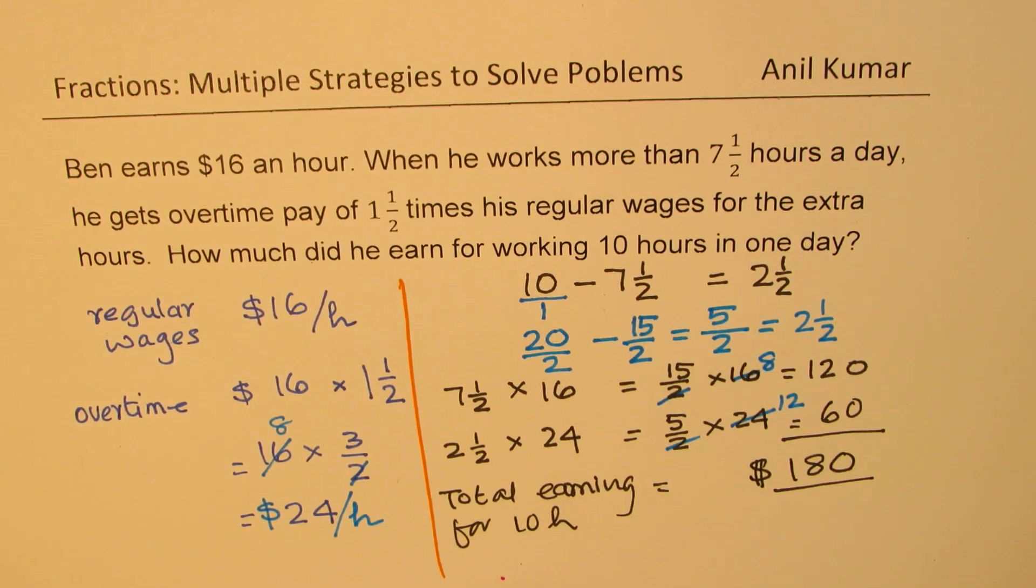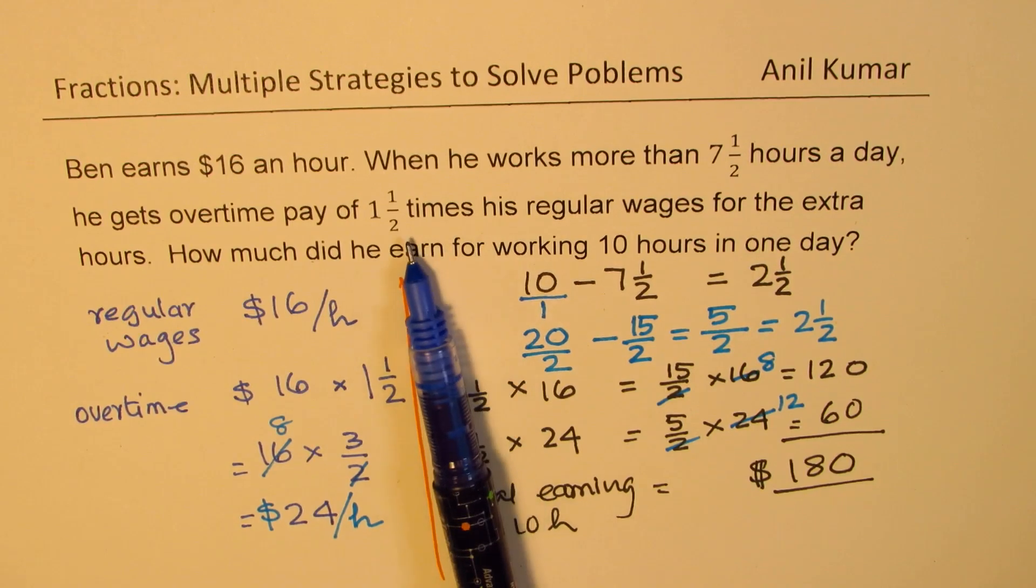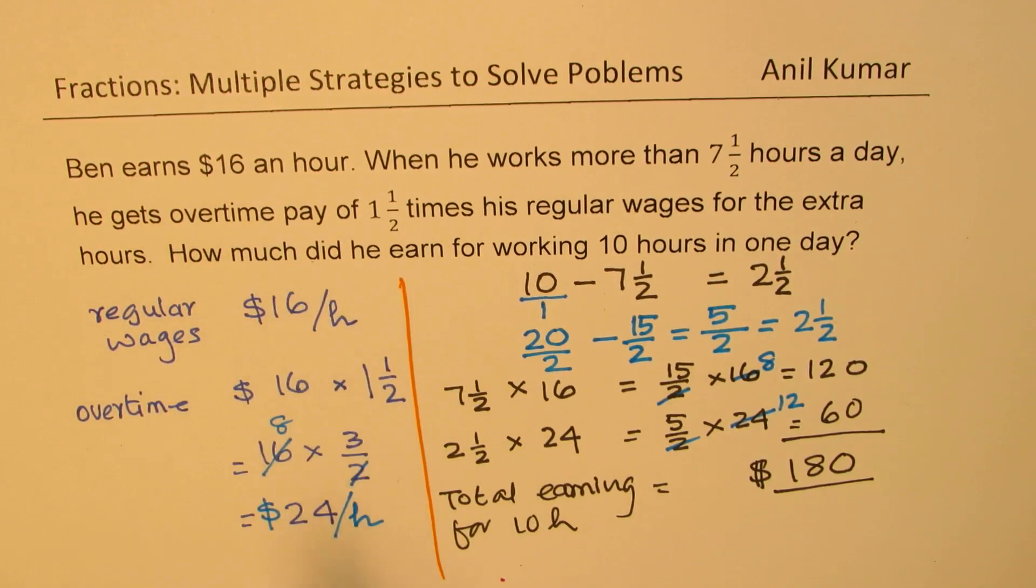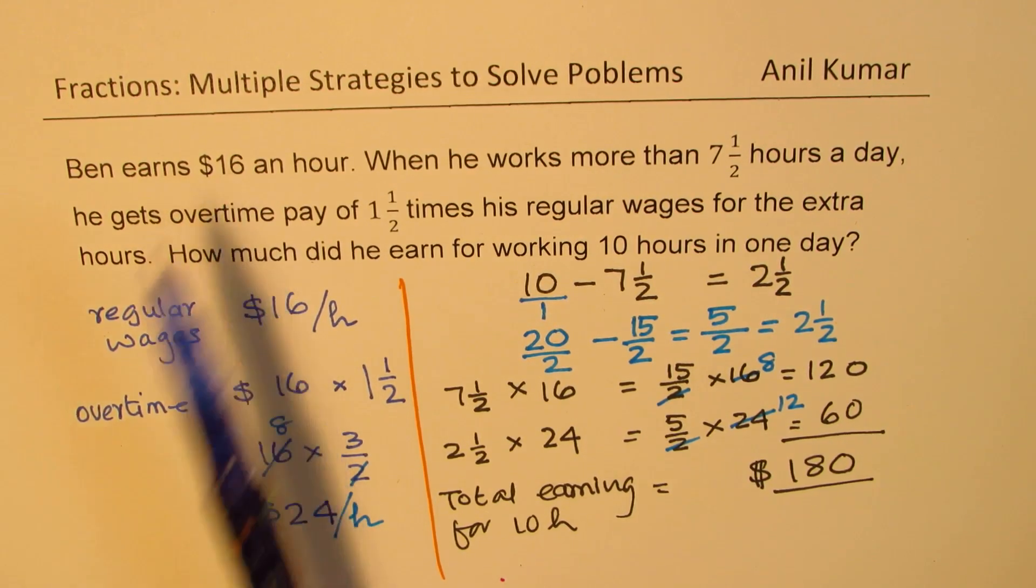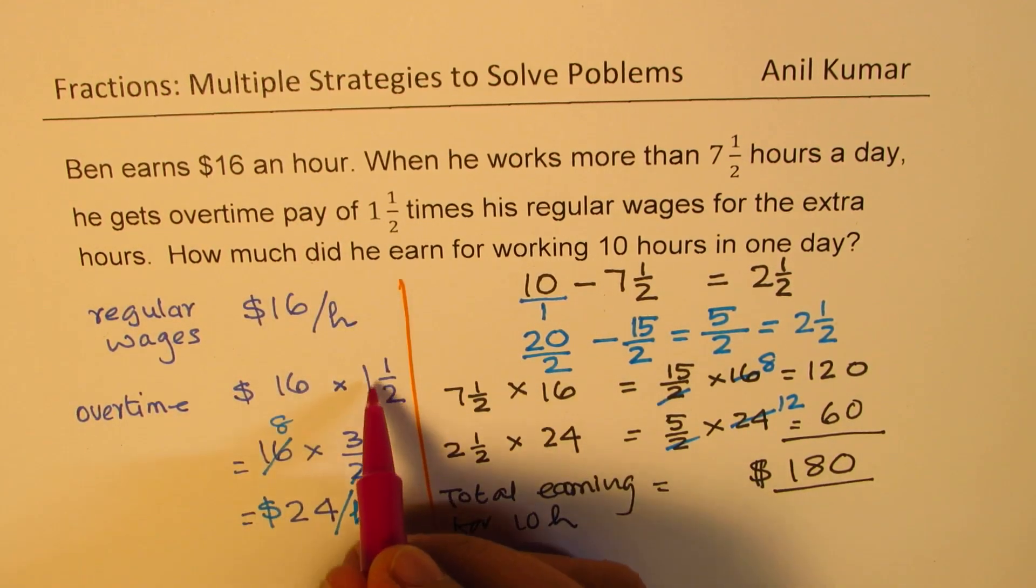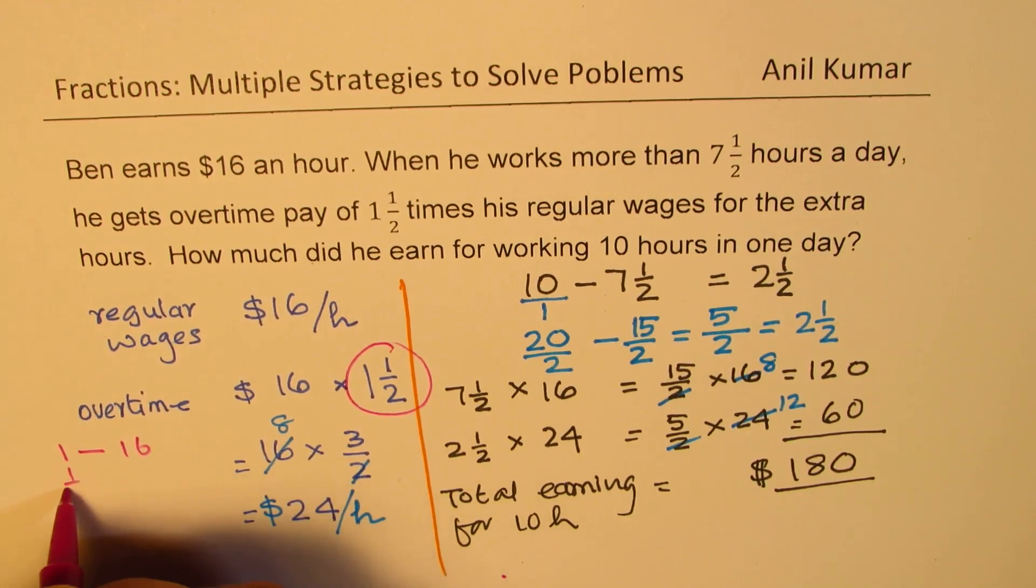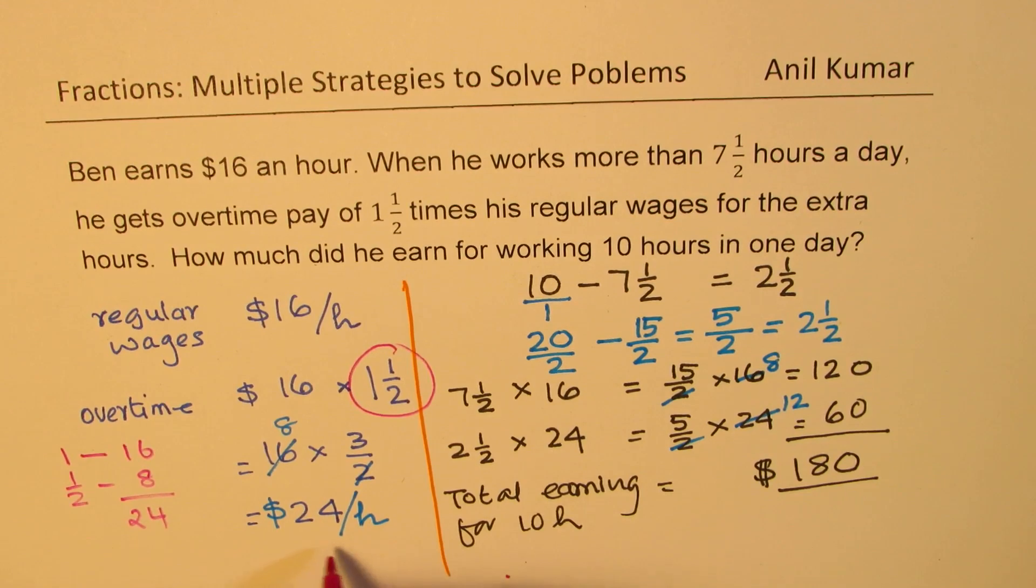So what we learned here is to understand, there is only the extra time for which Ben is being paid 1 and a half times. 1 and a half times 16 is 24. 1 is 16. Half is 8. So think like this. When we do 1 and a half, think like this. 1 is 16 and half is 8. So when you add, you get 24.